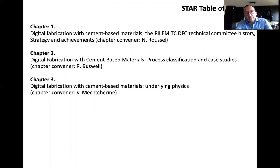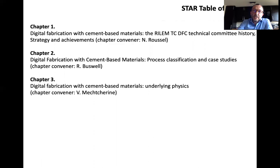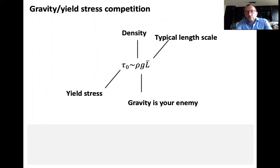All along the TC we listed research needs, because even with very different technologies, people were often facing the same difficulties. Key among these is the gravity versus yield stress competition — it involves a length scale that changes through the process, which is uncommon in casting. Without formwork, gravity is your enemy: if the material doesn't gain strength quickly enough, you get plastic collapse or instability of the printed element.